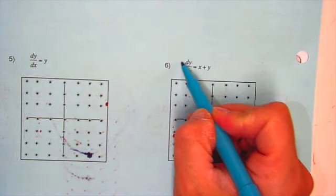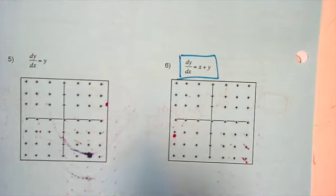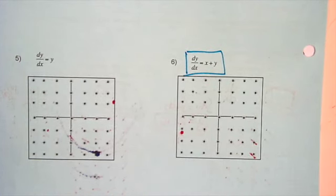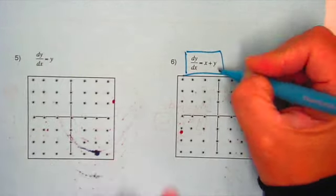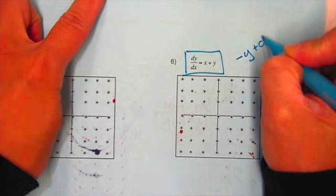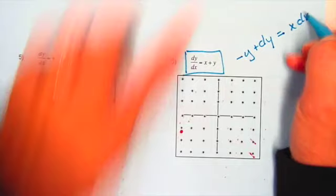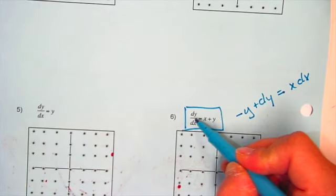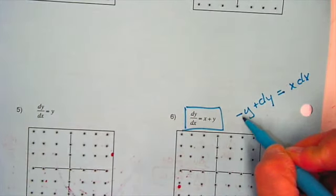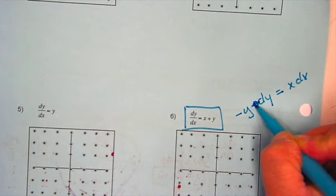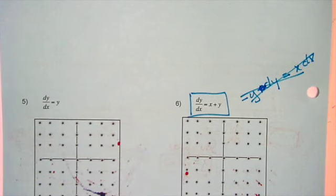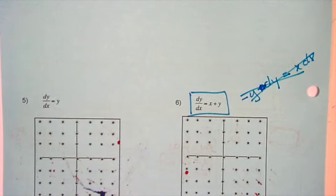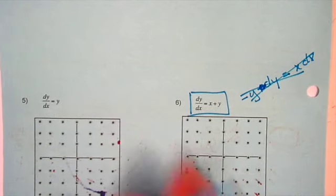Typically we want to do slope fields for problems that you cannot solve algebraically. Look at number 6 — this is a differential equation where there is no way to solve it algebraically by separating variables. If I put the y's with the dy's, you cannot integrate negative y plus dy — it always has to be multiplied by dy. So we cannot solve this algebraically.